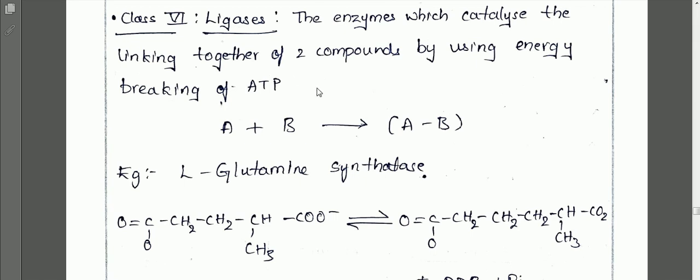ATP molecule is broken down to form ADP. The general reaction shows components A and B being linked together as A-B, and during the process the ATP molecule is broken down.